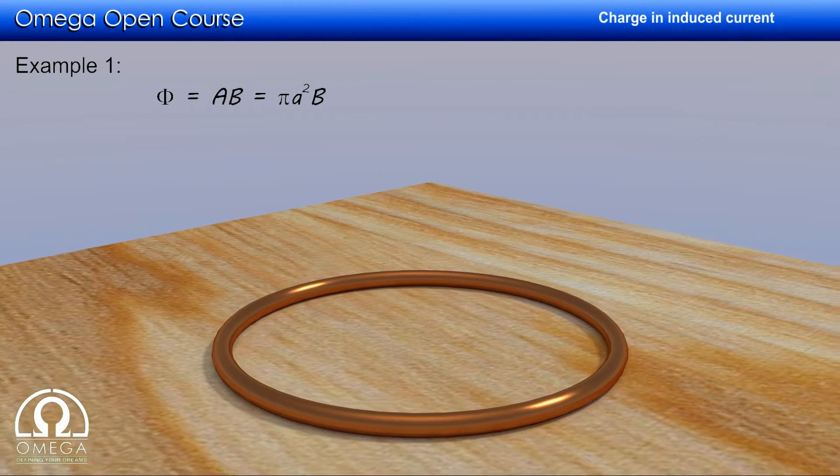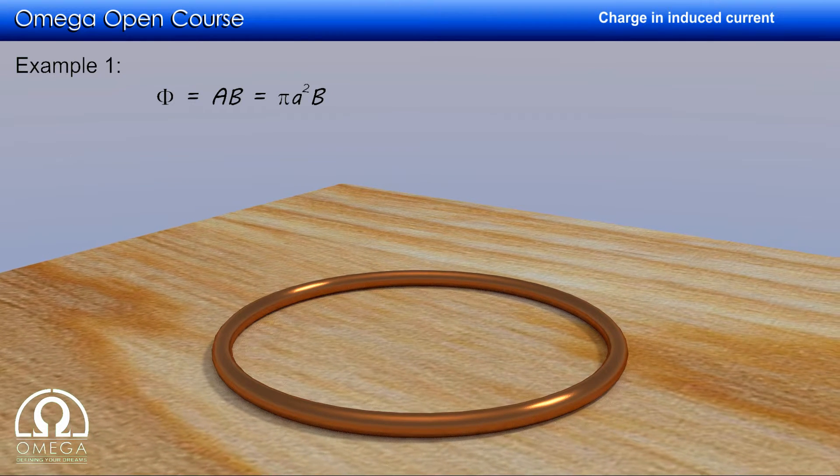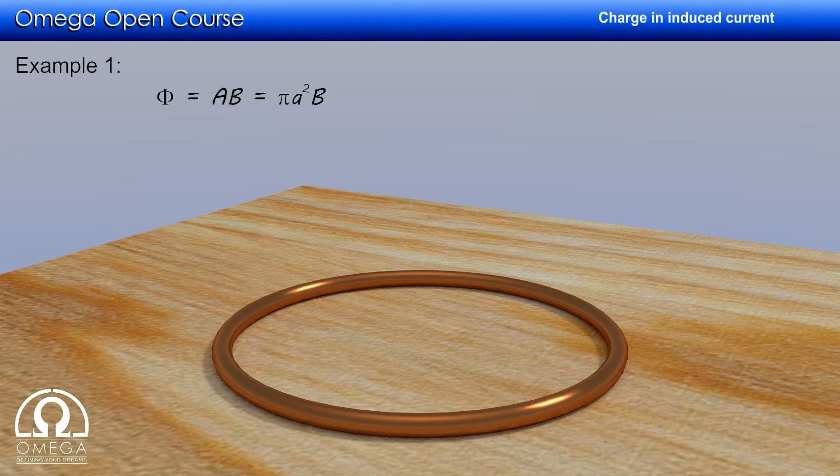Finally, there is no magnetic field, so the final flux is zero. Hence, the total change in flux is πA²B. Now total charge flowing through the ring is equal to change in flux by R, i.e. πA²B/R. This is our answer.